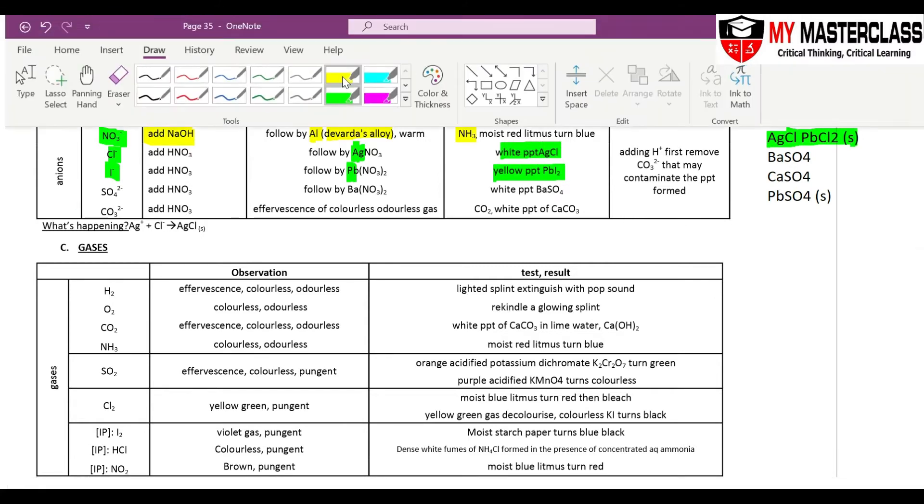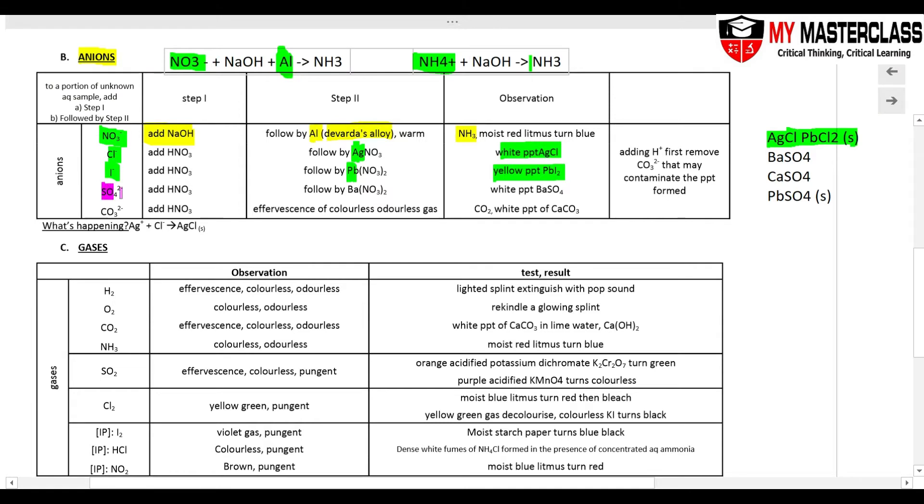And then to test for my sulfate, SO4²-, recall your solubility, my BaSO4 is solid. So I go and add barium nitrate, I will get a white precipitate. My barium partners the SO4, I'll get a white precipitate of BaSO4.